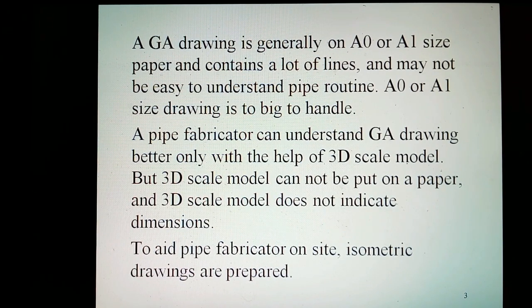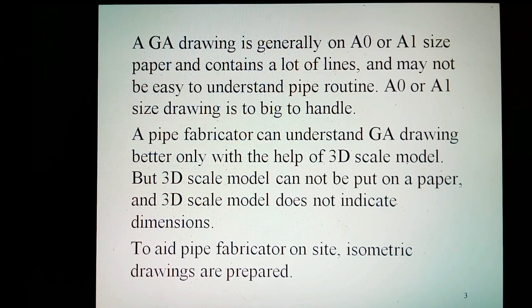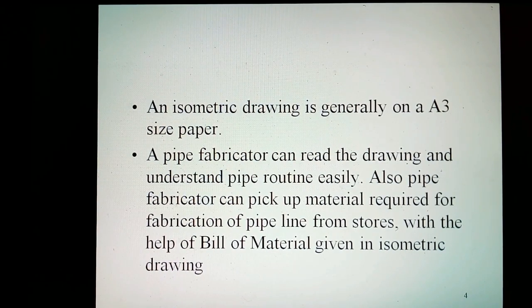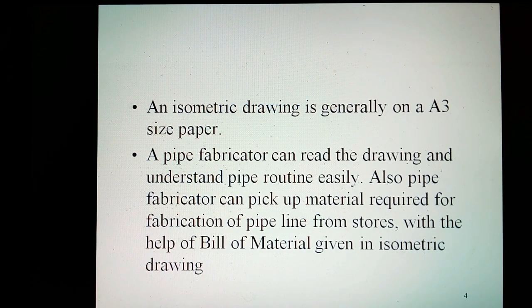The pipe fabricator can understand a GA drawing better only with the help of a 3D scale model. However, the 3D scale model cannot be put on paper and does not indicate dimensions. To aid any pipe fabricator on site, isometric drawings are prepared. An isometric drawing is generally on A3 size paper. The pipe fabricator can read the drawing and understand pipe routing easily, and can also pick up materials required for fabrication from stores with the help of the bill of material in the isometric drawing.